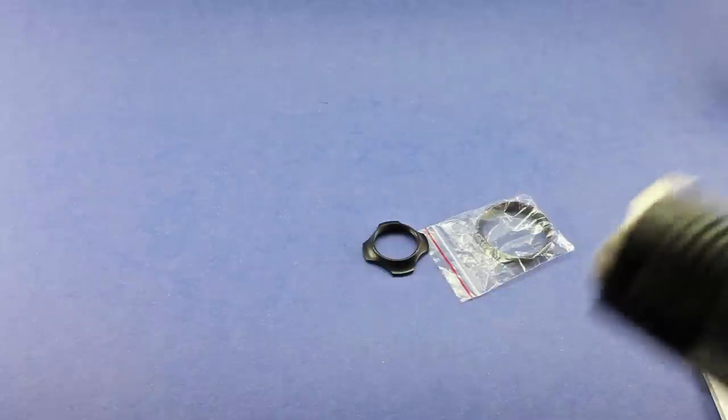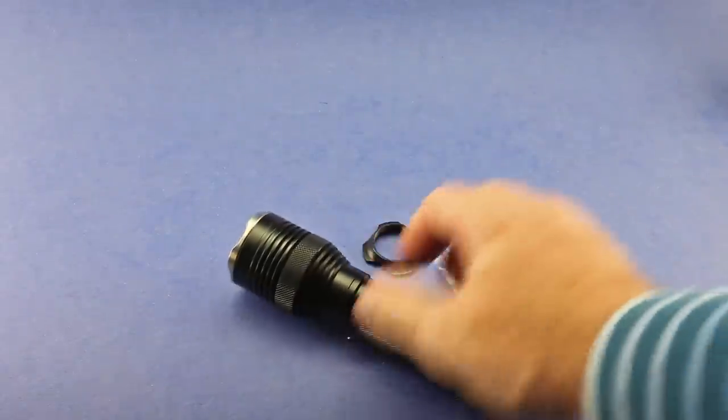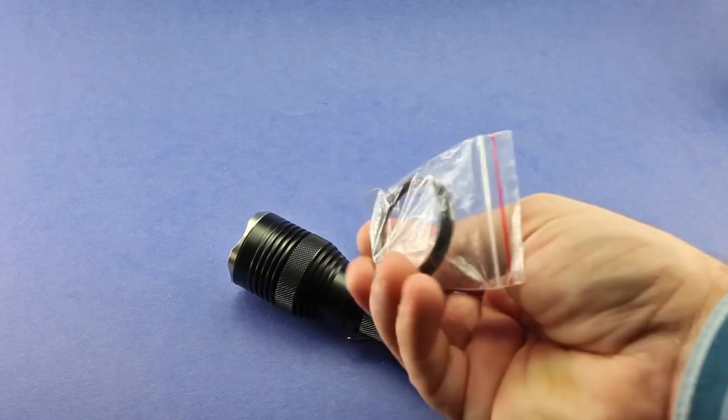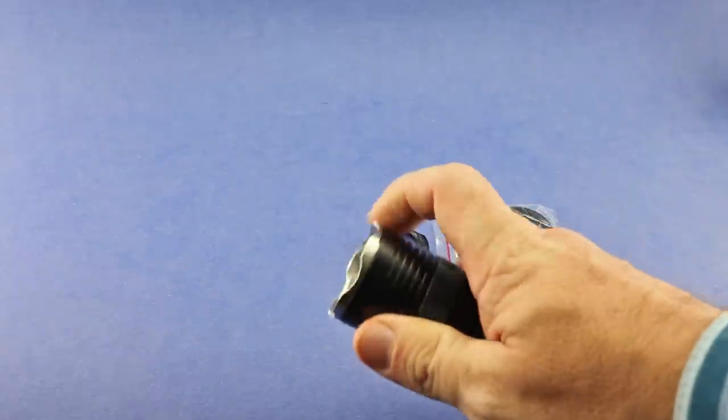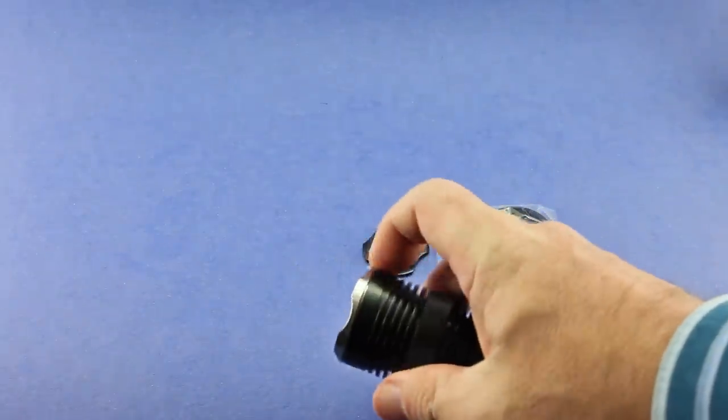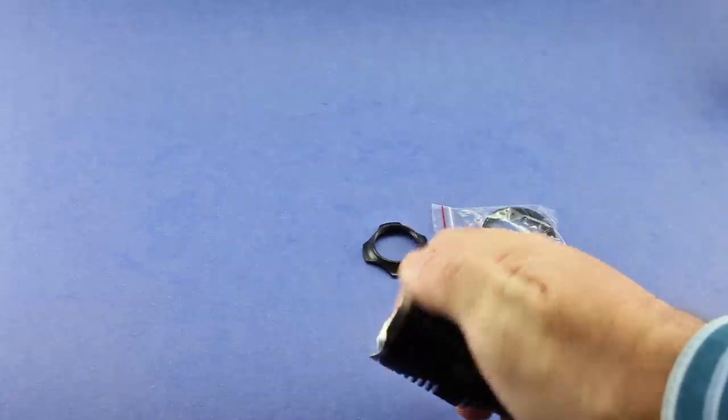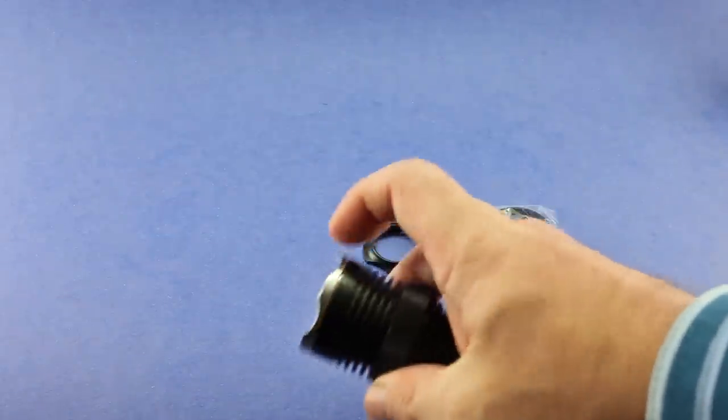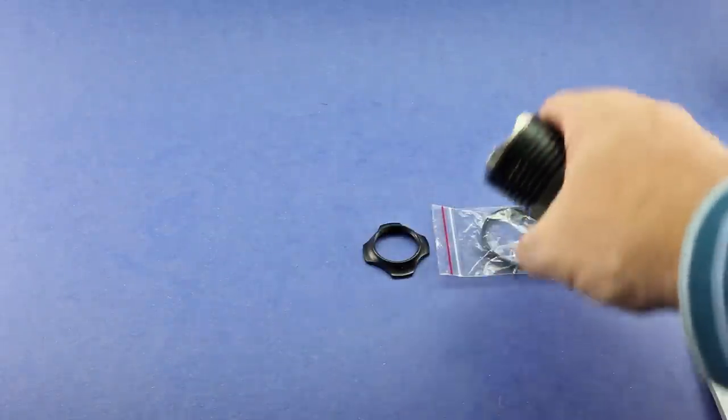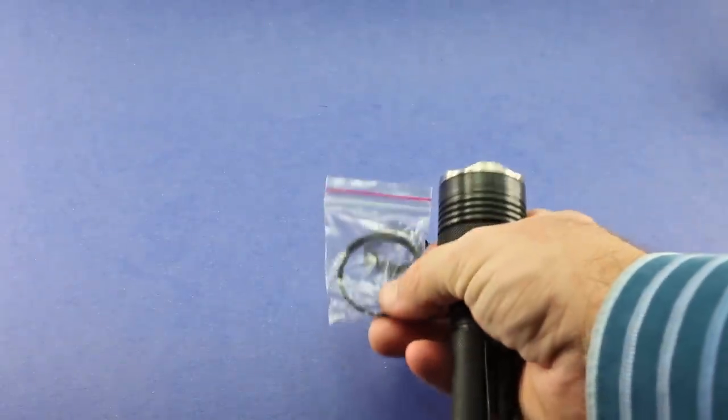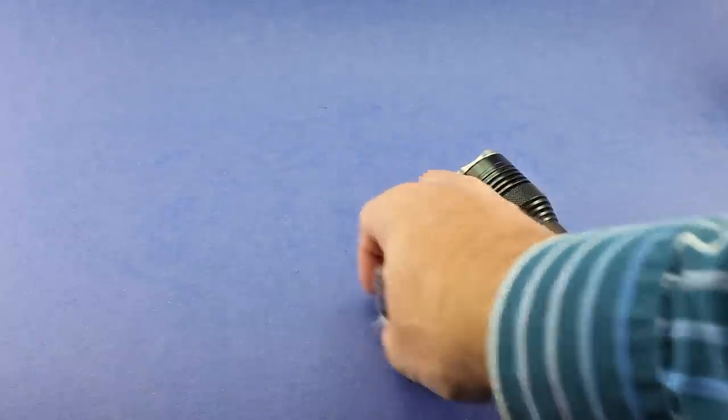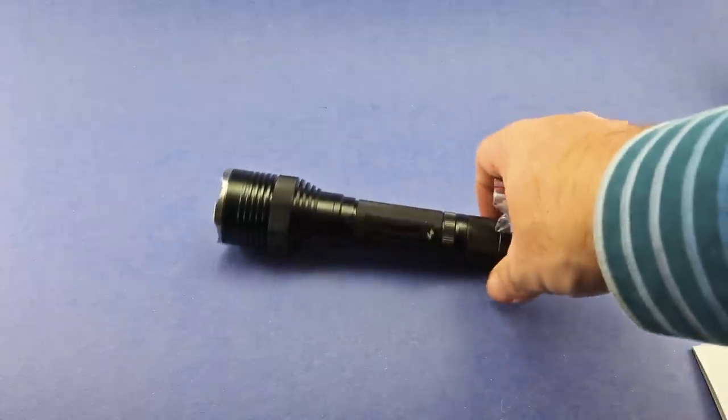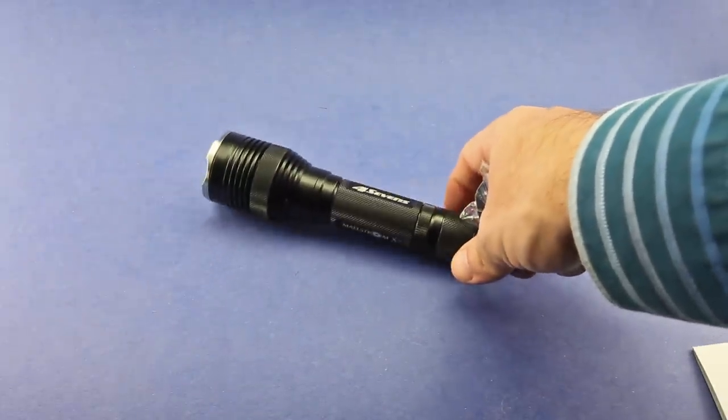It also includes this extra bezel. This is a smooth black bezel. The silver strike bezel here with the crenellations, that just screws off. And if you don't want the stainless steel bezel, you can swap it out for this nice smooth one. So a good package. One of the best accessory packages I've seen from a flashlight manufacturer. Good job, four sevens.